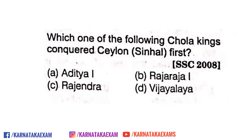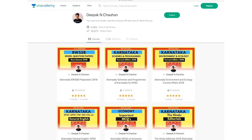Fifth question: which one of the following Chola kings conquered Ceylon (Sinhala) first? Options are Aditya, Rajaraja, Rajendra, or Vijayalaya. The answer is Rajaraja. Rajaraja was the first Chola king who conquered Ceylon.